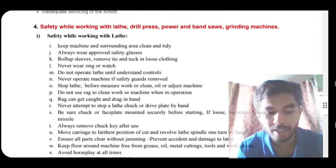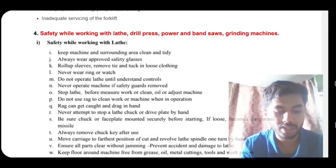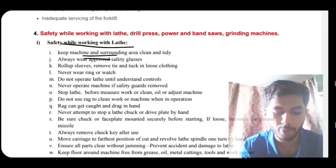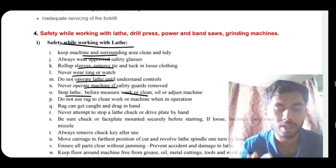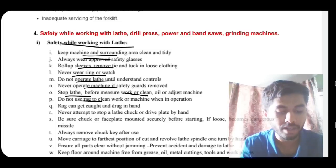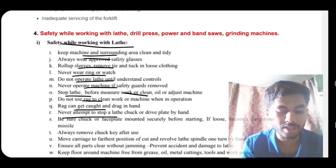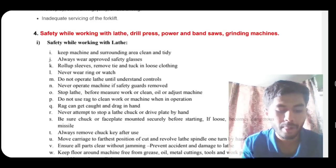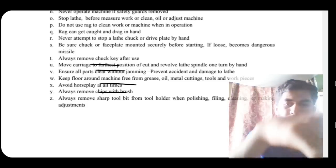Safety with various machines — five machines are covered. For the lathe machine: keep it clean and tidy, always wear appropriate safety glasses, roll up sleeves, never wear rings or watches, don't operate until you understand the controls, don't operate if safety guards are removed, stop the lathe before cleaning, never use a rag to clean (rag can get caught and drag your hand in), never attempt to stop a lathe by hand, ensure face plate is mounted, move carriage to the correct position, remove chips with a brush, and keep the floor free from material or grease.